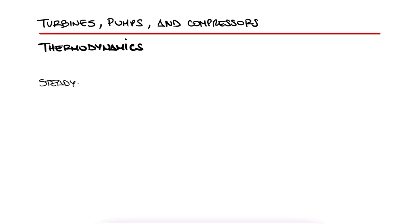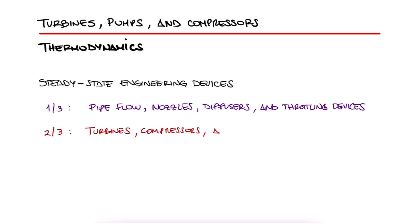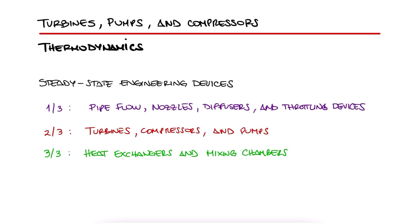In the previous main lecture video on steady state engineering devices, link below, we went over pipe flow, nozzles, diffusers, and throttling devices. In this lecture, the second of that three lecture series, we will learn about turbines, compressors, and pumps. If you want to learn about heat exchangers and mixing chambers, I'll leave the link to it down in the description of this video.